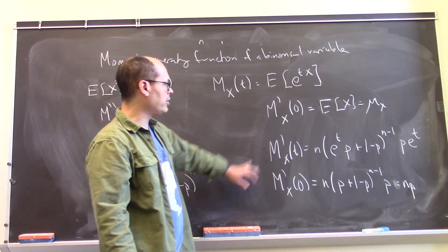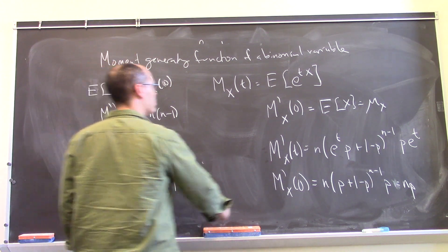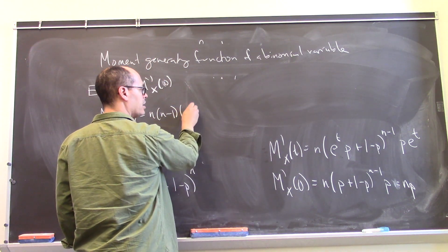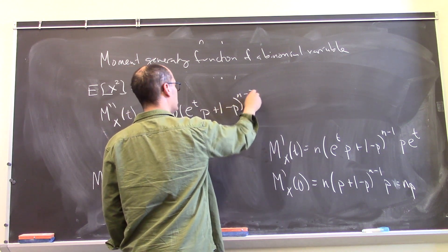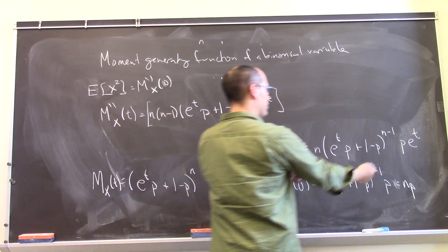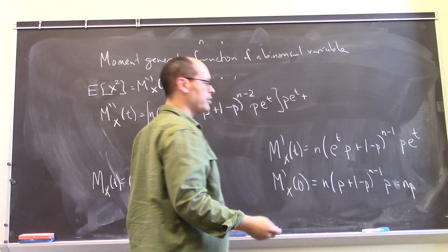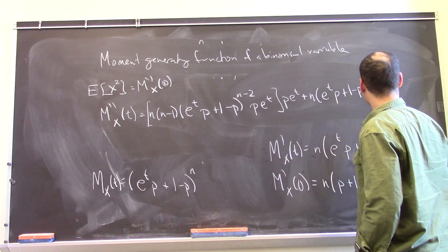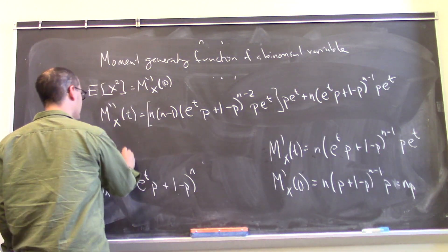Well, we already took the first derivative over here, so I'm going to differentiate again. So I'll get an n and an n minus 1, because I have to do a product rule. So we have n times n minus 1 times this thing over here, e to the tp plus 1 minus p to the n minus 2 times the derivative of the inside, which is p e to the t. So that whole thing is the derivative of this part here times the second plus the first times the derivative of the second. The derivative of this is itself p e to the t. Marvelous. So now we just plug in 0.